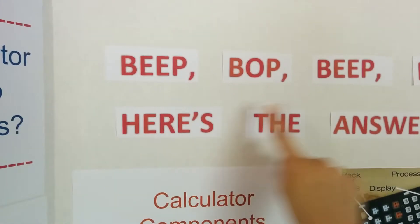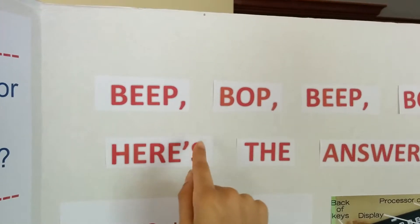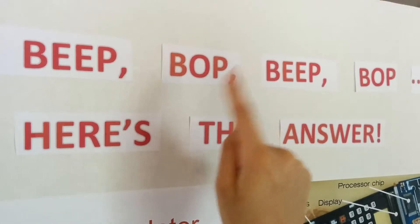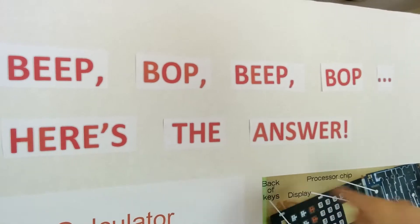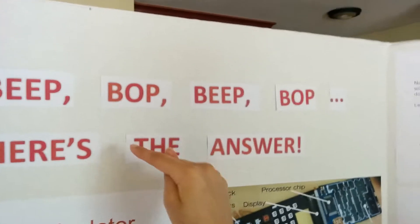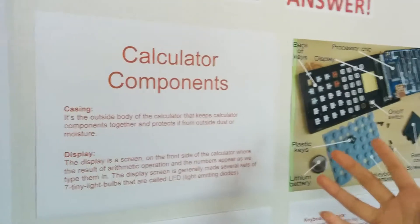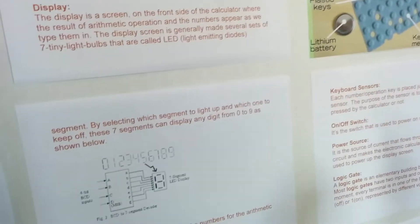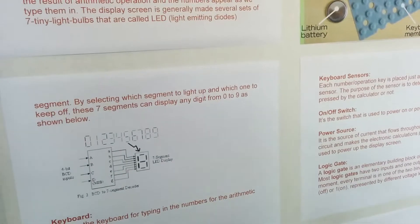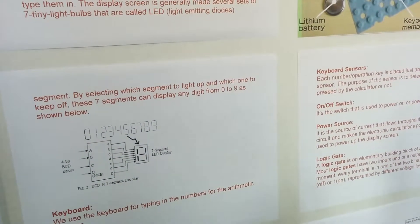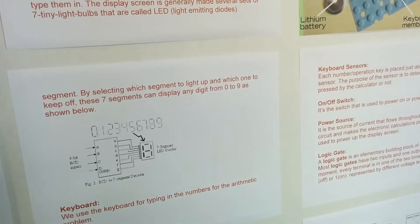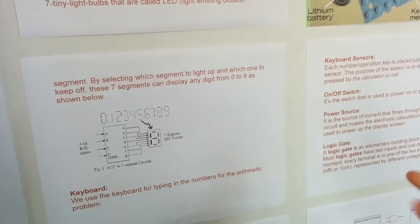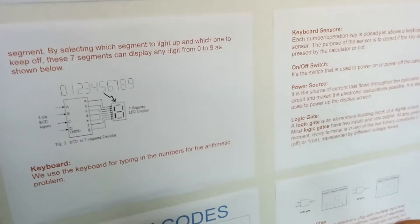Beep bop, beep bop, here's the answer. I put this because I kind of think of 'beep' as one and 'bob' as zero — so one, zero, one, zero. Here's the answer. Or you could say: flowing current, no flowing current, flowing current, no flowing current. Here's the answer. Because binary numbers — binary codes — are the thing mainly used inside calculators. Not just calculators: many other electronics like iPads, tablets, computers, and TVs. Many things use binary codes. And that's how binary codes are very helpful — even though they're only either no flowing current or flowing current.